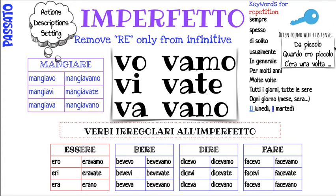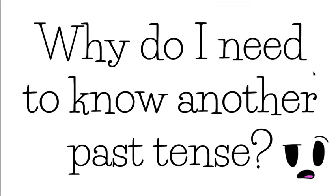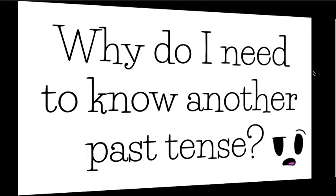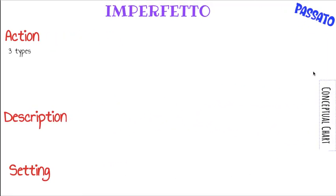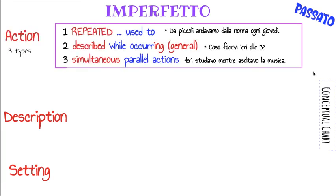You will often find in this tense openers such as da piccolo (when I was little), o da piccola if you're a girl, quando ero piccolo, o c'era una volta (once upon a time). So, why do I need to know another past tense? This one is used to describe actions in the past — actions that are repeated, so 'I used to,' or while they are occurring in general.